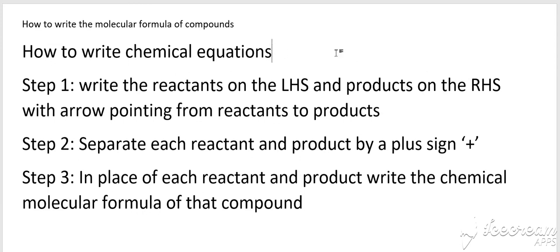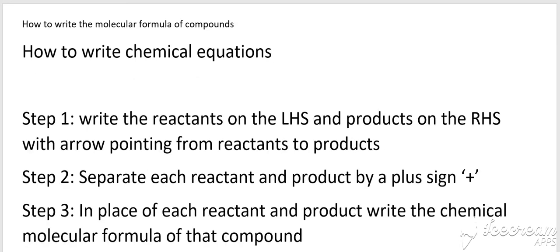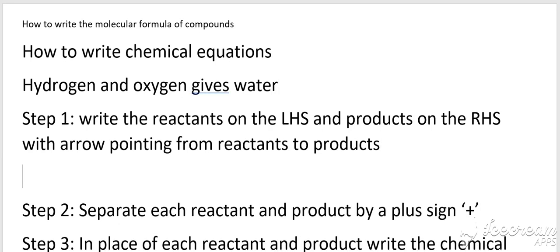With the help of an example, we know that hydrogen and oxygen gives water, so we are going to convert this reaction into a chemical equation. So what is the first step? The first step is we separate the reactants and products. What are the reactants? Hydrogen and oxygen, these are the reactants, and the product is water.